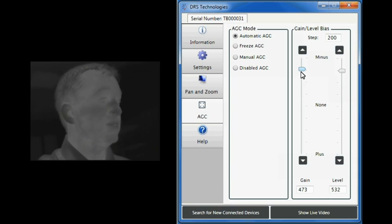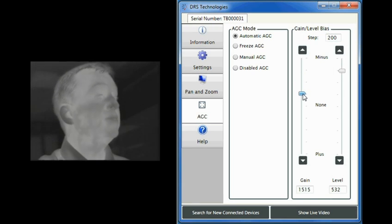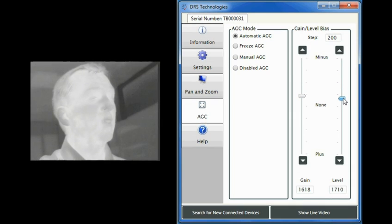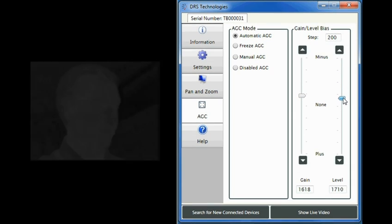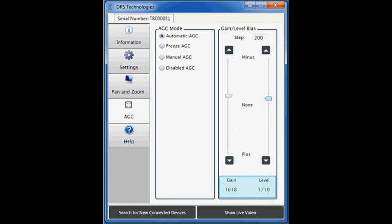The second way to adjust the gain level bias is to use your mouse to drag the sliders to the preferred settings. This is the easiest way to quickly optimize the image. The third way is to manually enter gain and level settings in the field boxes under the sliders. The method you choose to set your slider will depend on personal preference and your specific application.